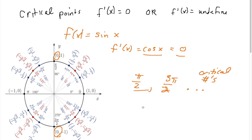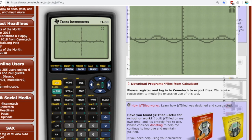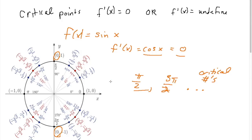We can look back at our graph to confirm: at pi over 2, the slope of the tangent line is 0, and at 3 pi over 2, the slope of the tangent line is also 0. To get the actual critical points, we evaluate these in the original function. Remember, plugging pi over 2 and 3 pi over 2 into the derivative gives us slope. To find the critical points, we evaluate them in the original function — sine of x. Sine of pi over 2 is 1.